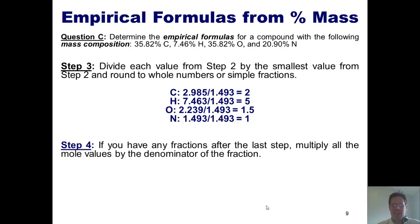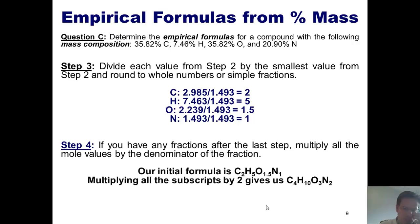Step four is if we have any fractions or decimals after step three, we multiply them all by whatever we need to to convert them into nice, neat whole numbers. So up to this point, our formula is C2H5O1.5N1. Now you note that it's absolutely ridiculous to have a formula where you have O1.5. So what in the world can we do to fix that? We multiply every one of these subscripts by 2. The final empirical formula is C4H10O3N2.